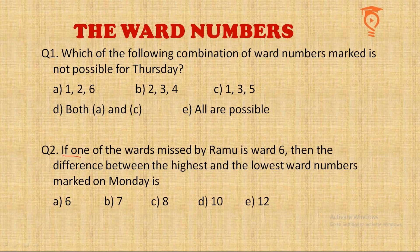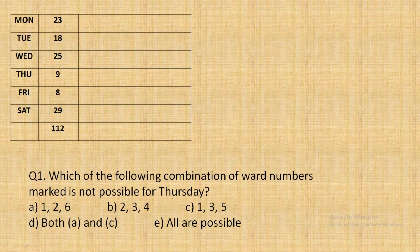I'm starting the solution now. I've made a small table — let me brief you about the data. Every day three wards were visited whose numbers are added. On Monday the three wards visited had a sum of 23; on Saturday, 29; Friday, 8; etc. I have summed all these numbers. This is the sum of all the numbers across all visits.